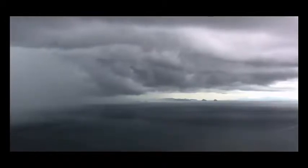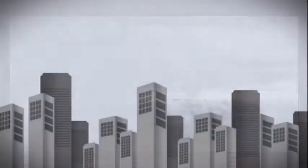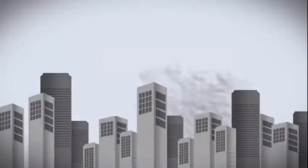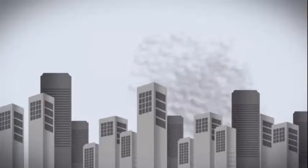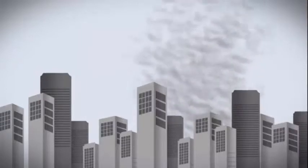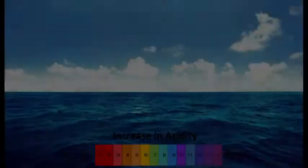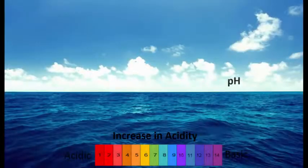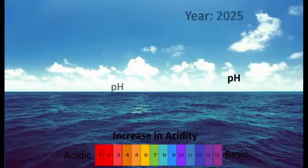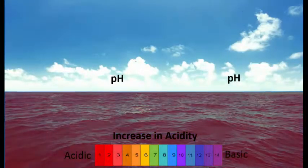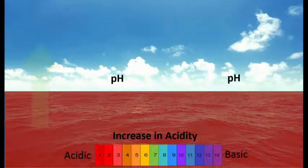Over time, this has subsequently caused a 26% increase in ocean acidification. It is estimated that without substantial changes to our behaviour, an approximately 170% increase in ocean acidification when compared to pH levels during pre-industrial times will occur by the year 2100.